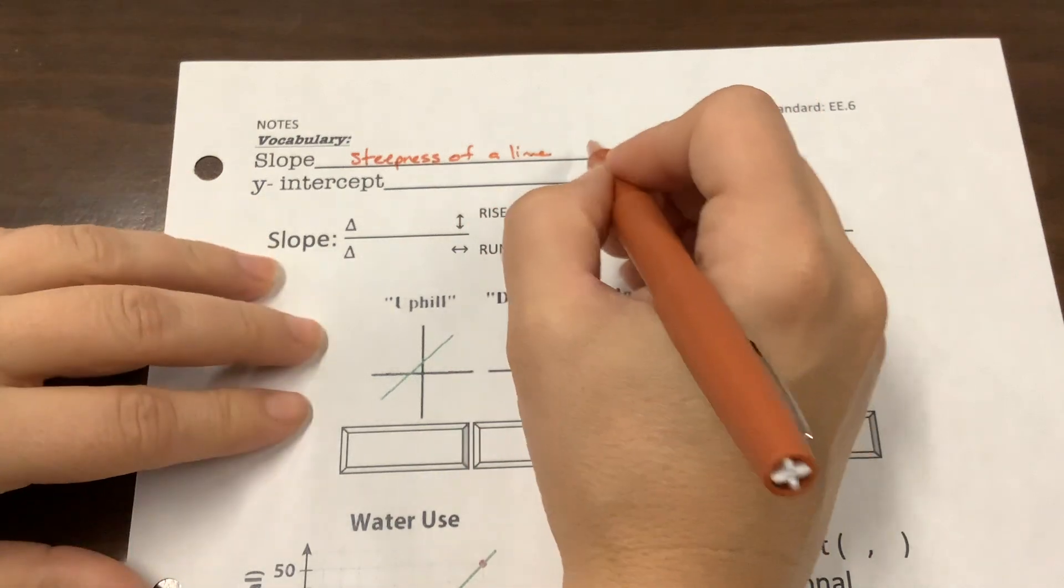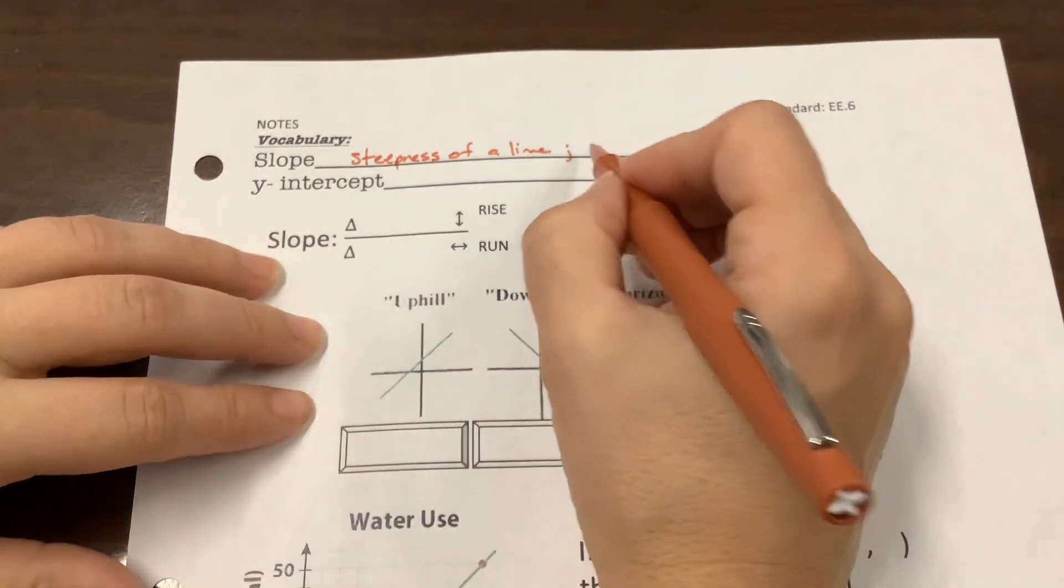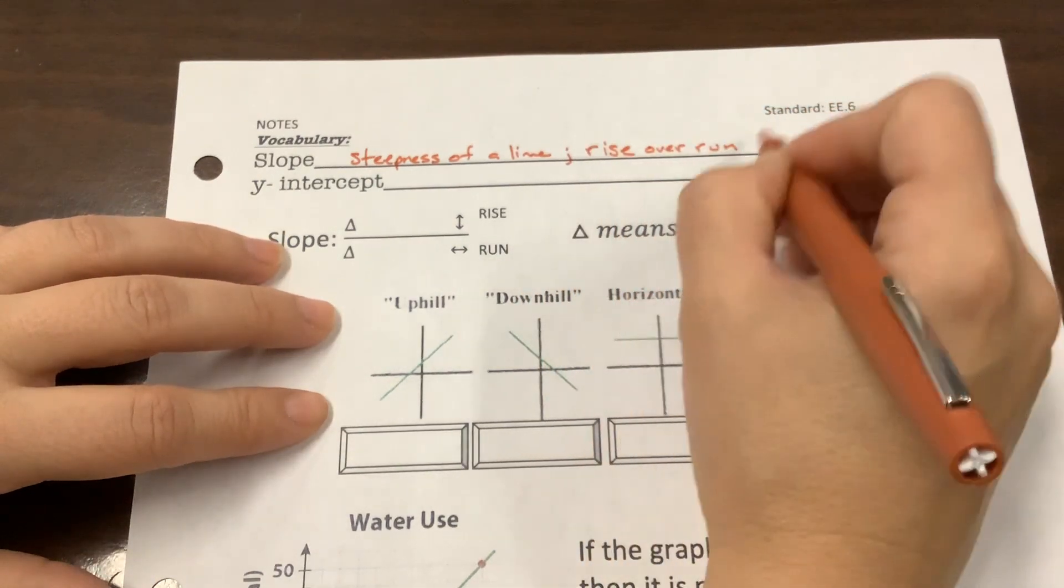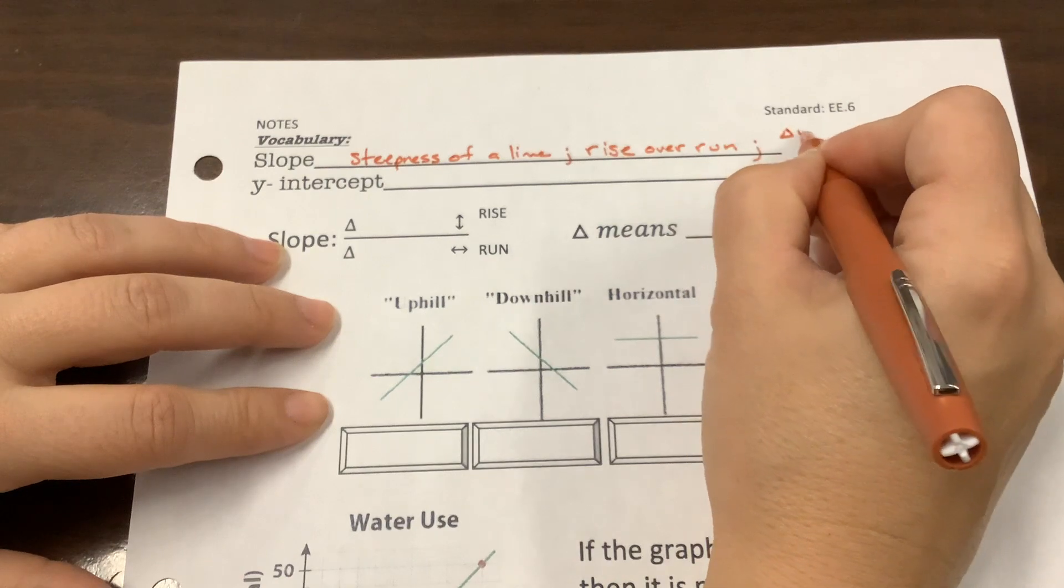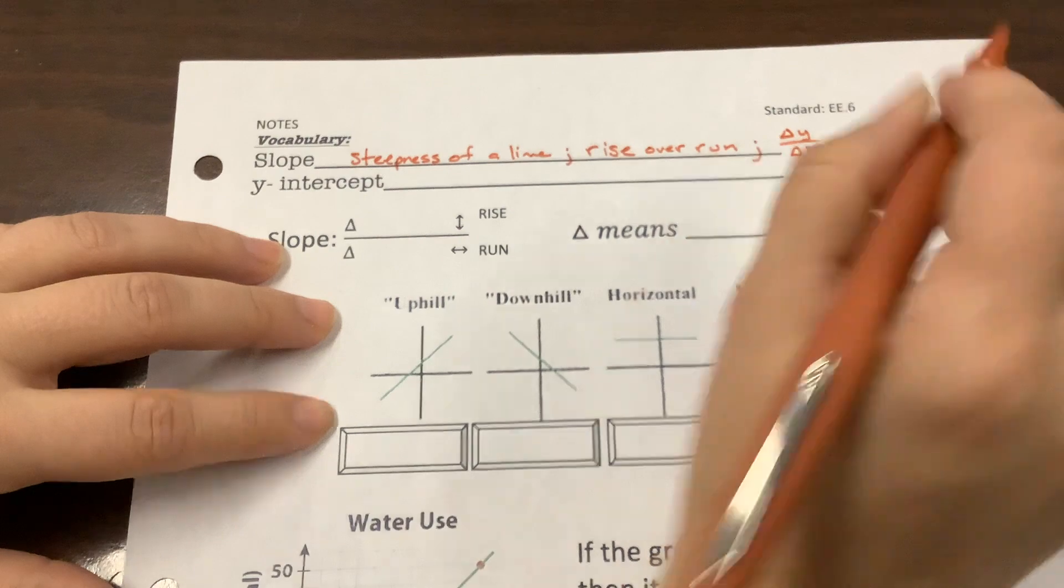More importantly, we talk about it as the change in y compared to the change in x. So it is rise over run, which also means the change in y over the change in x, which we've talked about in our input-output tables already.